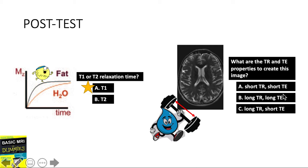Question 2: this image shows what TR and TE properties are needed to create this image? First, what type of image is this? This is a T2 weighted sequence, so T2 weighted sequence highlights the long TE property of water. This is created by long TR and long TE property.